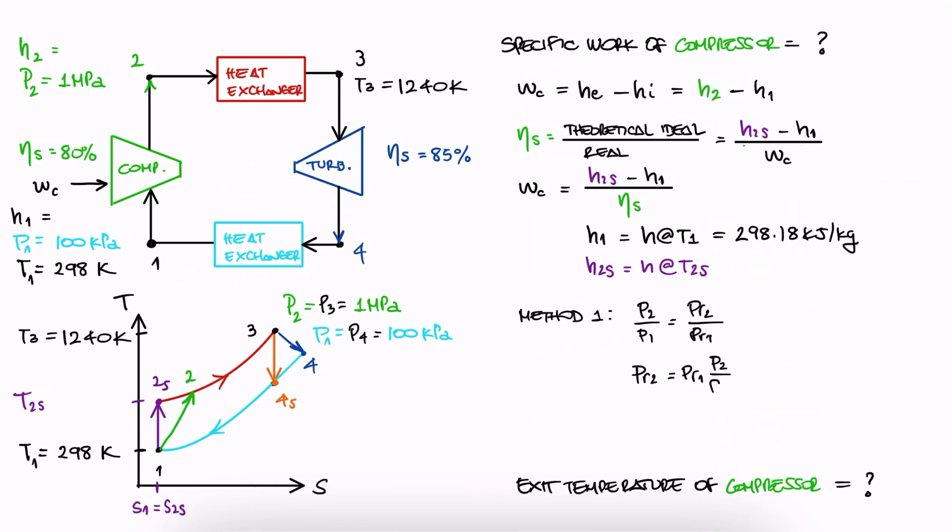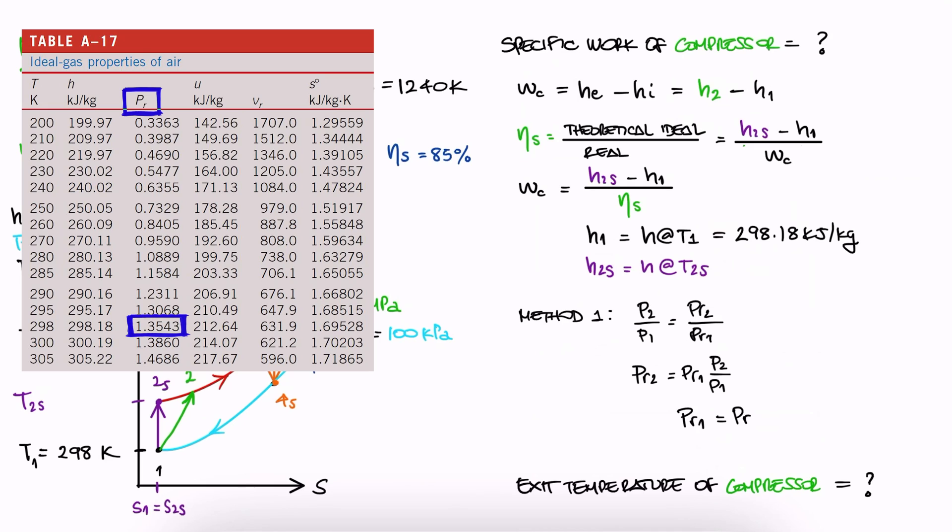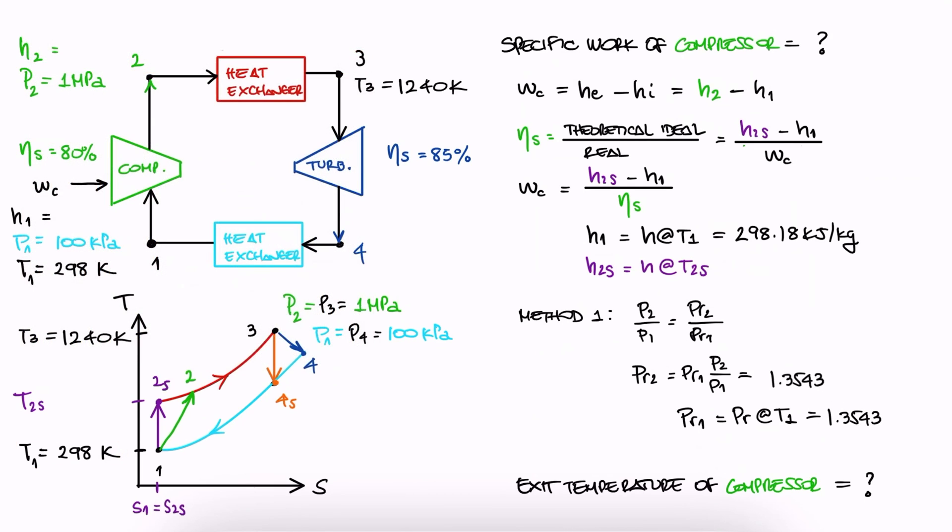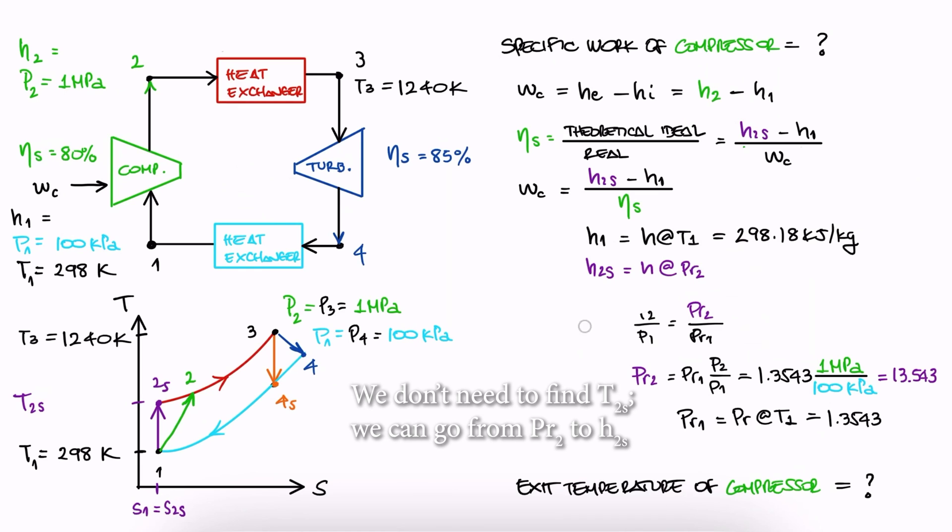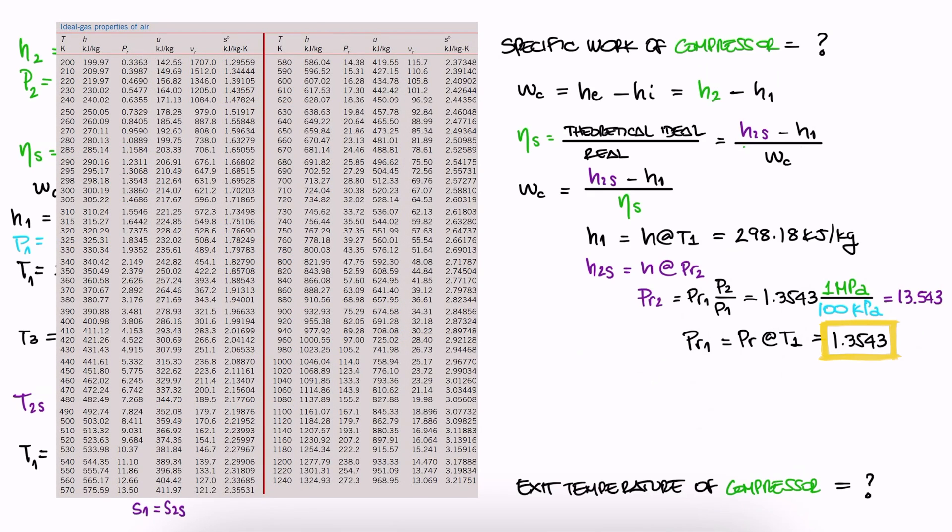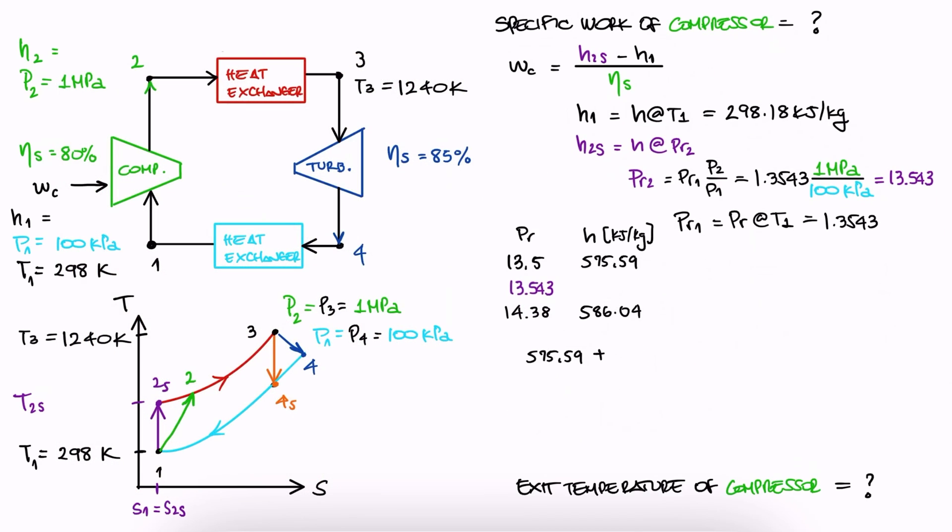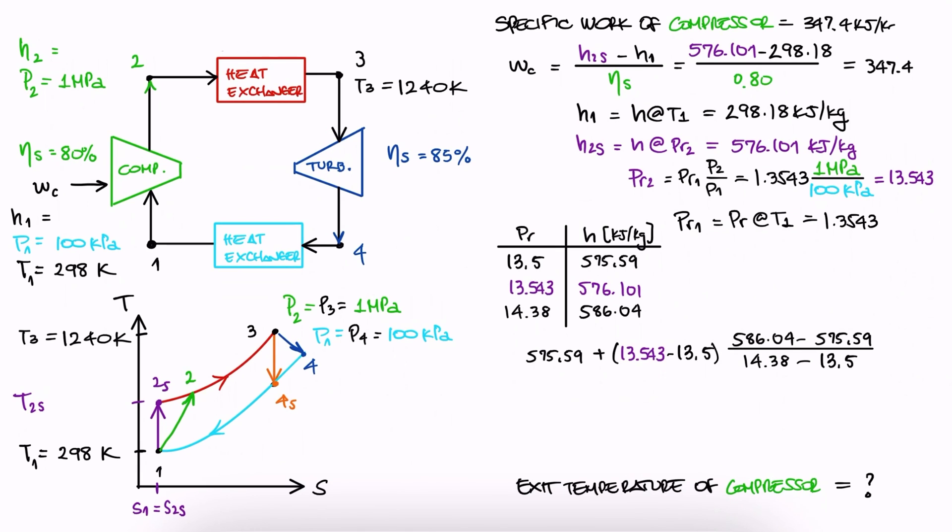We solve for PR2, we notice we need PR1, we look for PR1 from the table value that corresponds to T1, and we substitute the values to find PR2. With this value, we see that there needs to exist a specific enthalpy value that corresponds to that PR value. Since this PR value is not exactly one of the ones in the table, we notice that we need to interpolate between 13.5 and 14.38. We interpolate, like we've done multiple times before, and find the value for H2S. And finally, we now substitute it to calculate the specific work of the compressor.